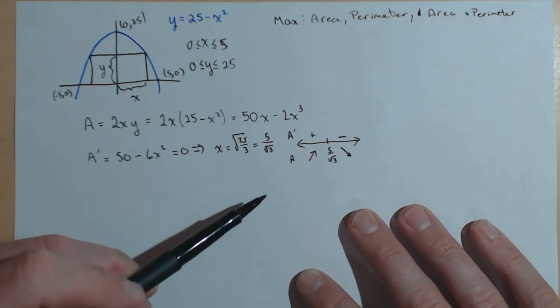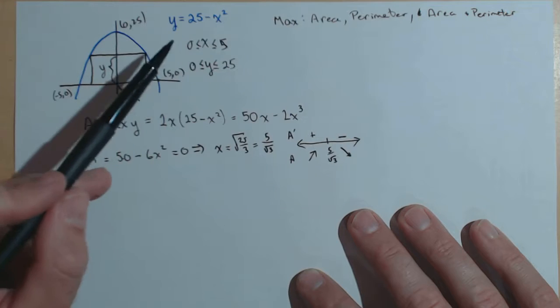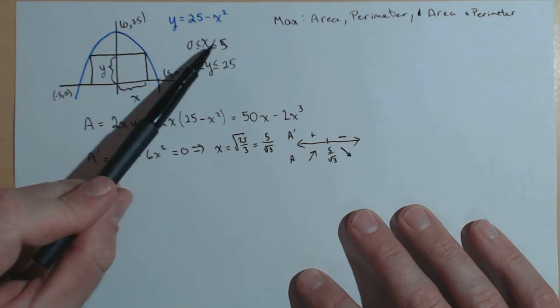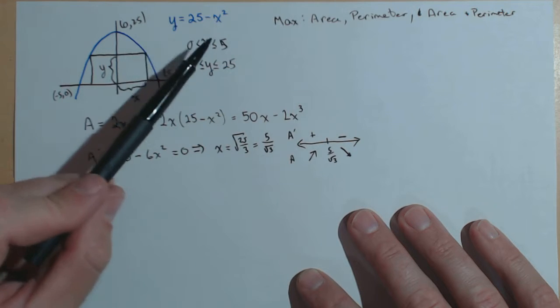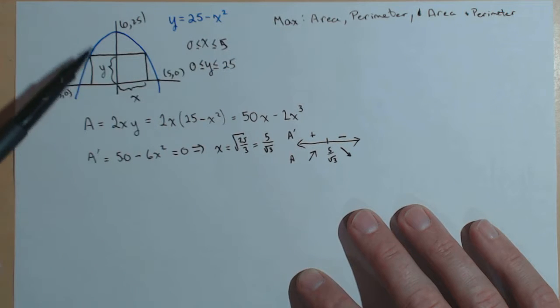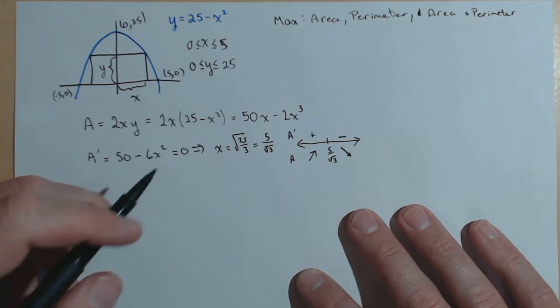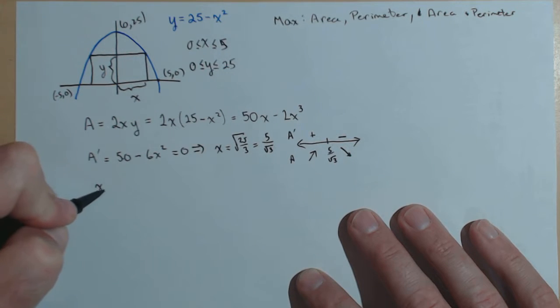Now, our minimum area is going to come at x equals 0 or x equals 5, because if x is 5, y is 0. If x is 0, y is 25, we don't have a rectangle, we just have a line. So this is going to give us our maximum area, is x equals 5 over rad 3.